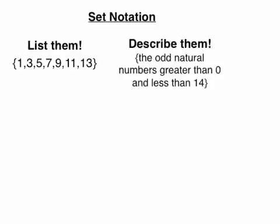Another way is to describe what all the objects in the set have in common, and what no object that's not in the set could possibly be described with. So, in this case, the odd natural numbers greater than 0 and less than 14 describes every element that's in the set, and no element that's not in the set.